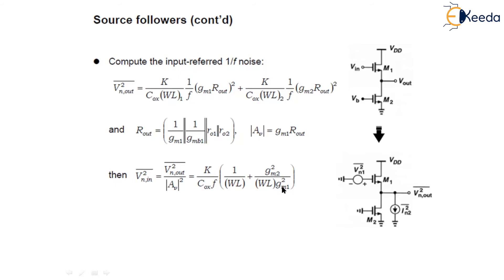So this is the input referred flicker noise and input referred thermal noise voltage in the source follower configuration. In the next lecture, we will study the noise in cascode stage. Thank you.